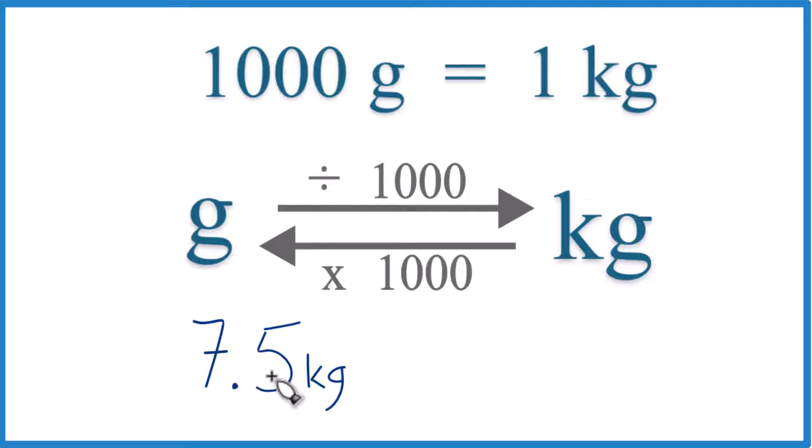In this case, we have 7.5 kilograms. We want to get that to grams. So kilograms to grams, we're going to multiply by 1,000 like this.